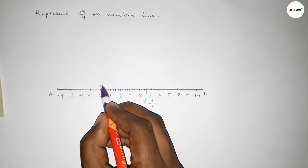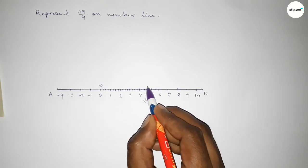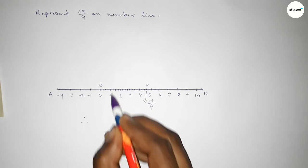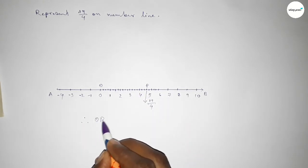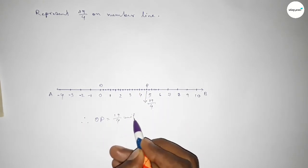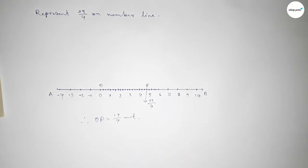Taking here O and here P, so therefore OP equals nineteen over four units. That's all. Thanks for watching — please share it with your friends.